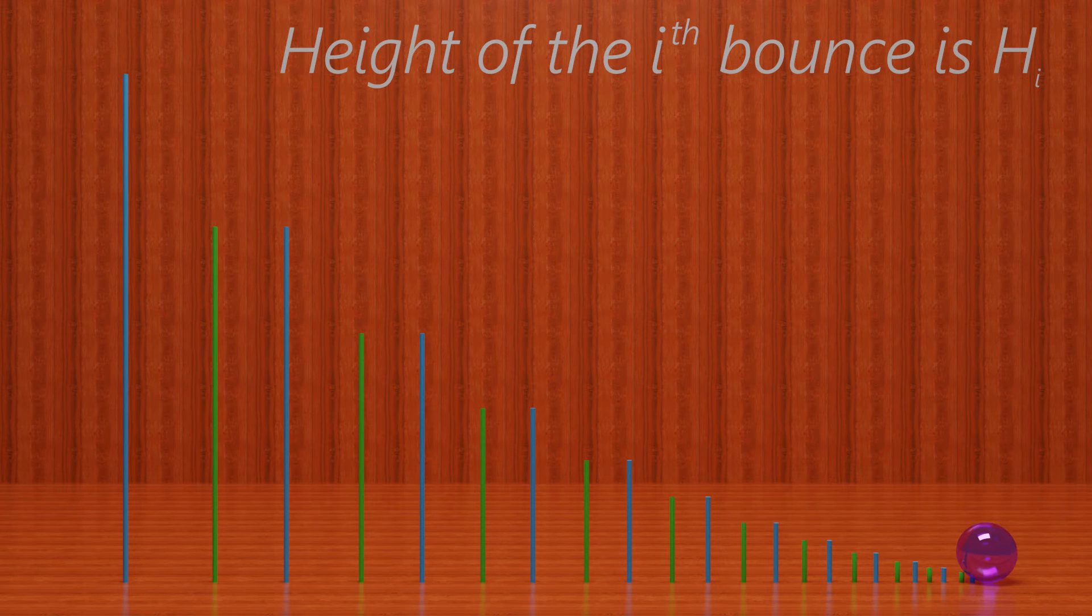H0 is the initial height. H1 is the height of the first bounce. H2 is the height of the second bounce, and so on.